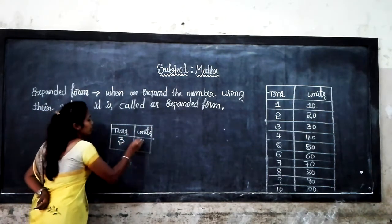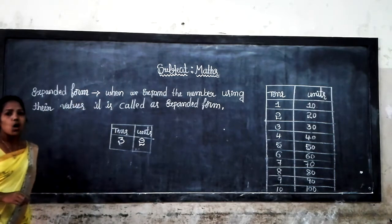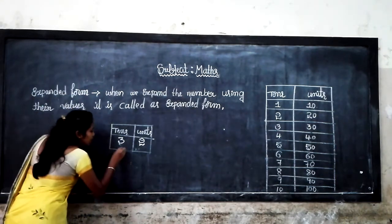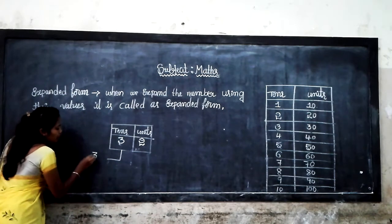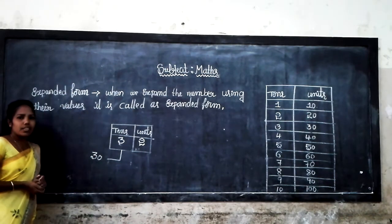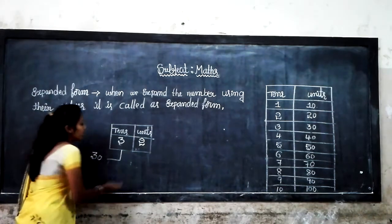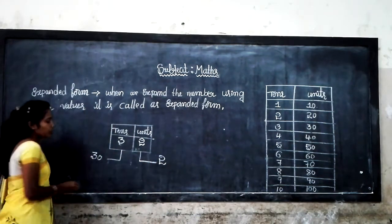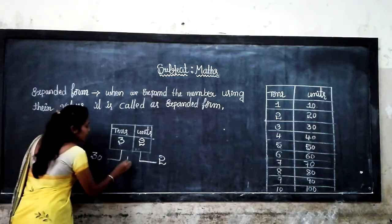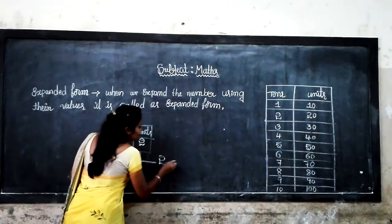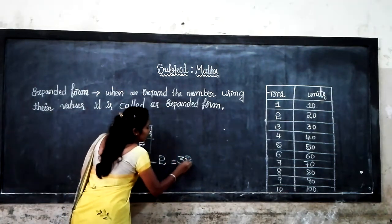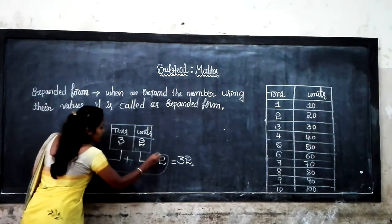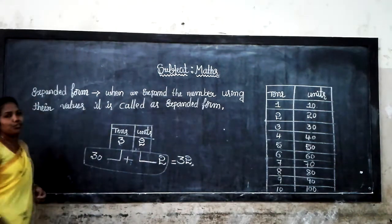For example, 32. What is the place value of 32? 3 times 10 is equal to 30. Then 2 units is equal to 2.